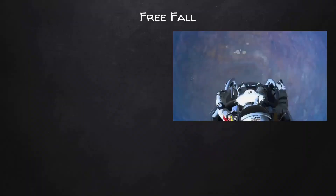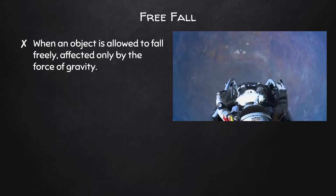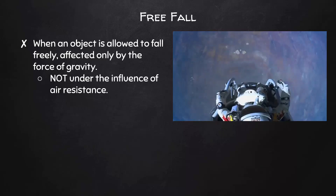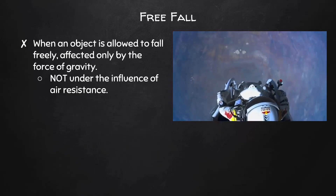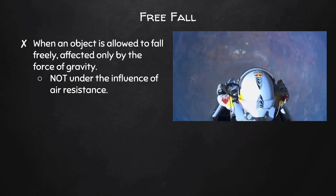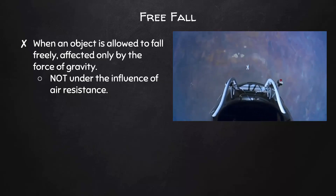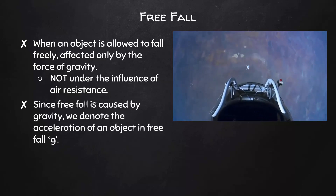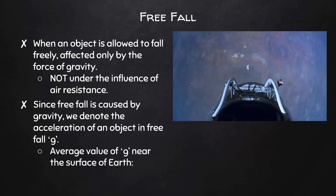Freefall is an example of accelerated motion, which is when an object is allowed to fall freely, affected only by the force of gravity — meaning it is not under the influence of air resistance. Since freefall is caused by gravity, we denote the acceleration of an object in freefall as little g. The average value of little g near the surface of the Earth is 9.81 meters per second squared.